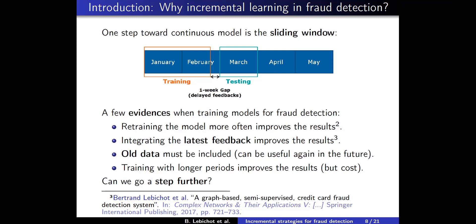Let us discuss a few pieces of evidence about the sliding window. Retraining the model more often — for example, sliding the window once a week instead of once a month — will increase the results. Integrating late feedback will also improve the results. Older data must be included because it can be useful again in the future — for example, knowing what happened during the last Christmas period. Training with a longer period will also increase results, but at a cost. So the question is: where do we start?